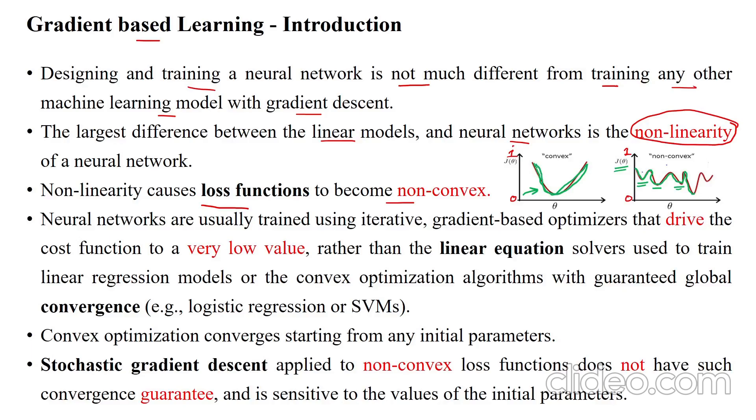This is called a convex curve. The curve which is not smooth to reach the converging point, with the possibility of many local minimum and saddle points.